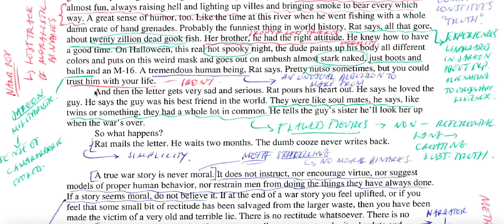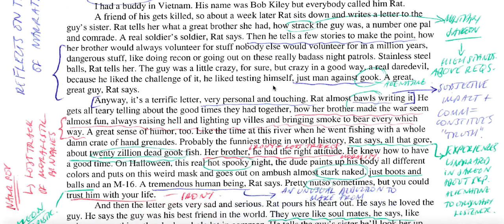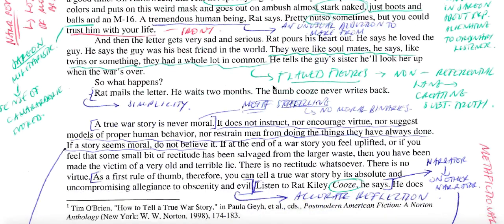That seems to be a sign not only of the illogical nature of the experience, but of his own mental inadequacy for thinking you could trust your life with someone who is insane — that is an unusual conclusion to make. 'A tremendous human being' is a highly unusual deduction from the impression of Rat Kiley we've been given through his recollection of the letter.